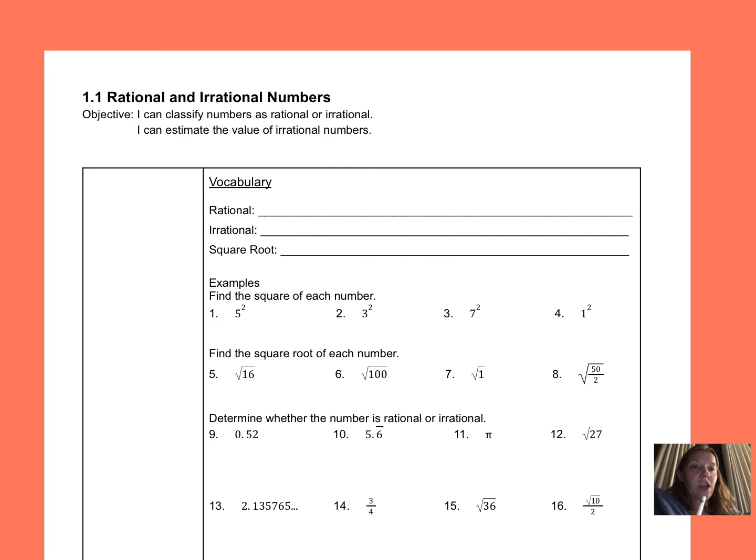So starting with the vocabulary, a rational number is a number that can be written as a fraction. That does not mean it's going to always be in fraction form already, but it means we could write it as a fraction if we wanted to.